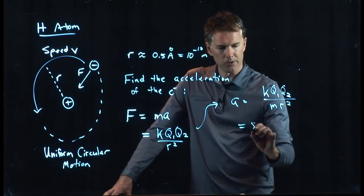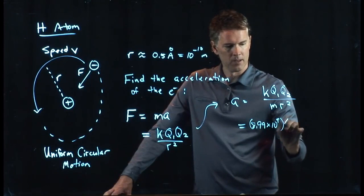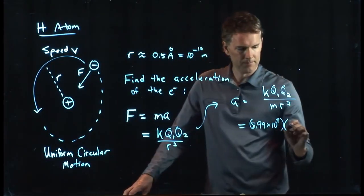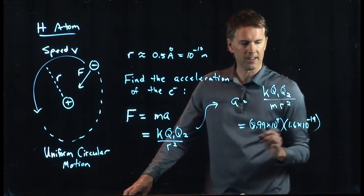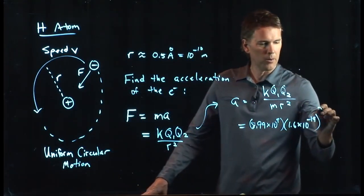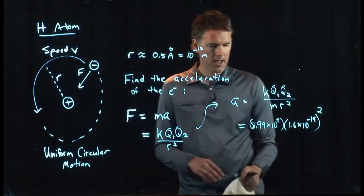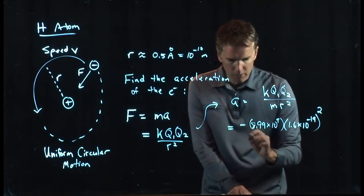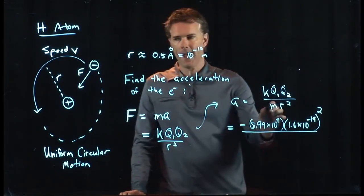We've got a K, which is 8.99 times 10 to the 9. We've got a Q1, which is an electron. An electron has charge 1.6 times 10 to the minus 19 Coulombs. There's another one that's a proton, but that also has the charge of the electron. And we need to put a minus sign out in front of the whole thing because one of those is negative. The electron is negative.